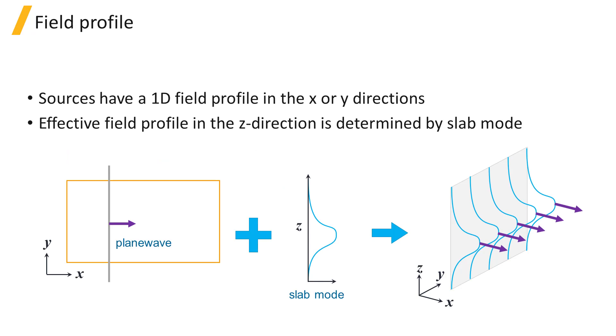The sources in VAR FDTD have a 1D field profile in the X or Y directions depending on the source type and injection direction, but the effective profile of the source along the Z direction is determined by the selected vertical slab mode.